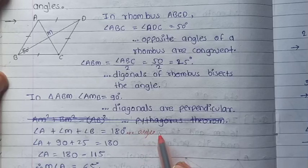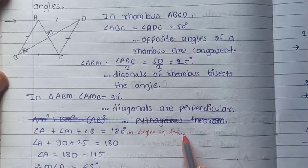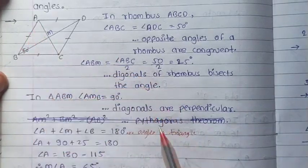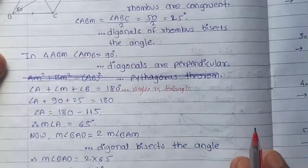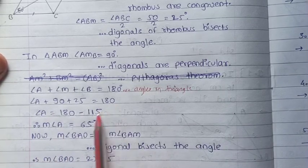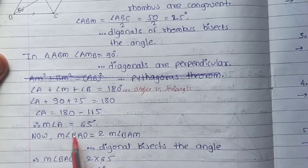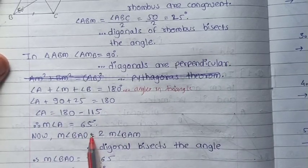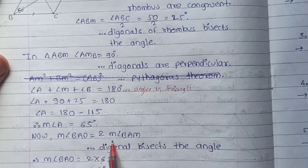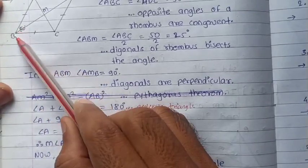In triangle ABM, the sum of angles equals 180 degrees. So angle A plus 90 plus 25 equals 180, giving angle A plus 65 equals 180. Therefore angle BAM equals 65 degrees. Now the measure of angle BAD equals twice the measure of angle BAM.